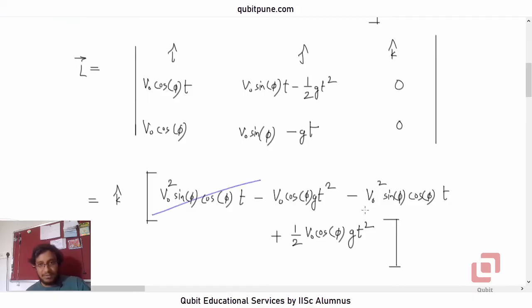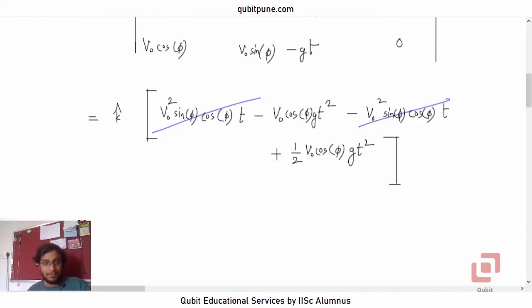This term will cancel this term. V naught squared sin phi cos phi t. One is positive. The other one is negative. So that will be k cap and 2.